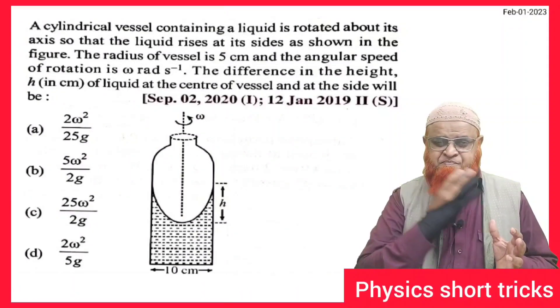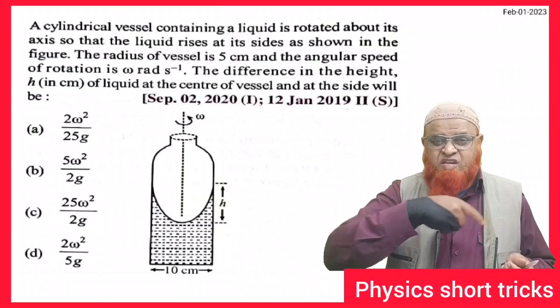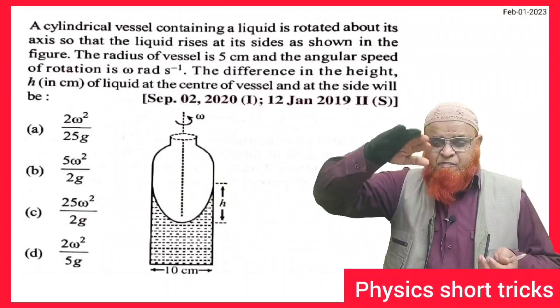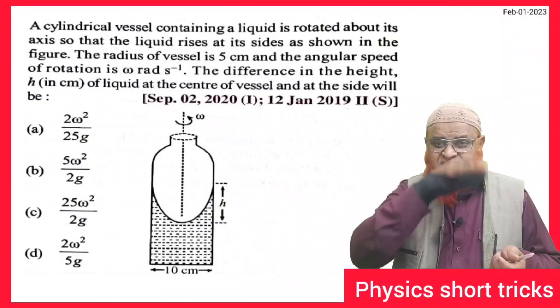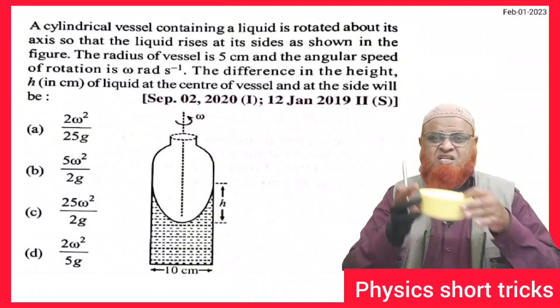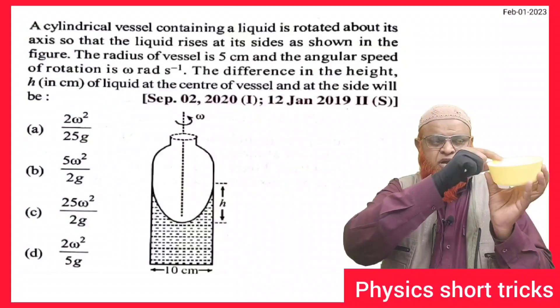Because of this rotation, the water inside the vessel is going to rise at the sides. What is the shape of the liquid above the surface? It is just like this bowl shape. When this bowl is going to rotate...